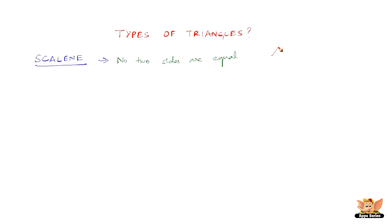For example, if this side is one, this is two, and this will be three. So this is a scalene triangle.